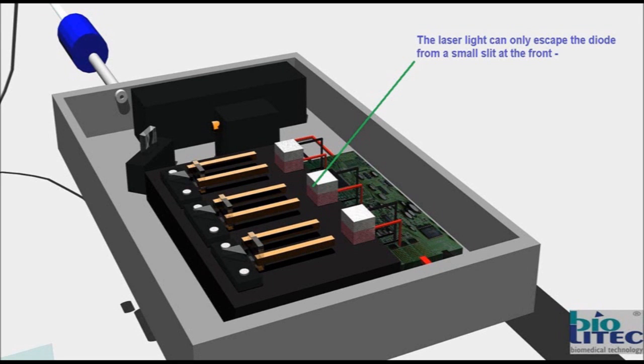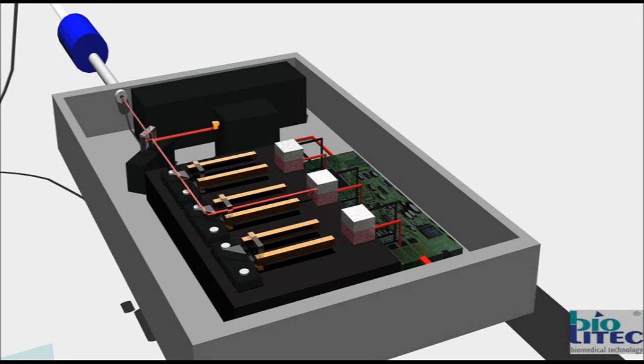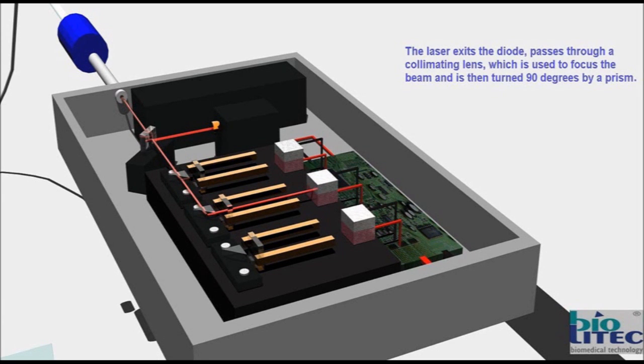The laser light can only escape the diode from a small slit at the front. The laser exits the diode, passes through a collimating lens, which is used to focus the beam, and is then turned 90 degrees by a prism.